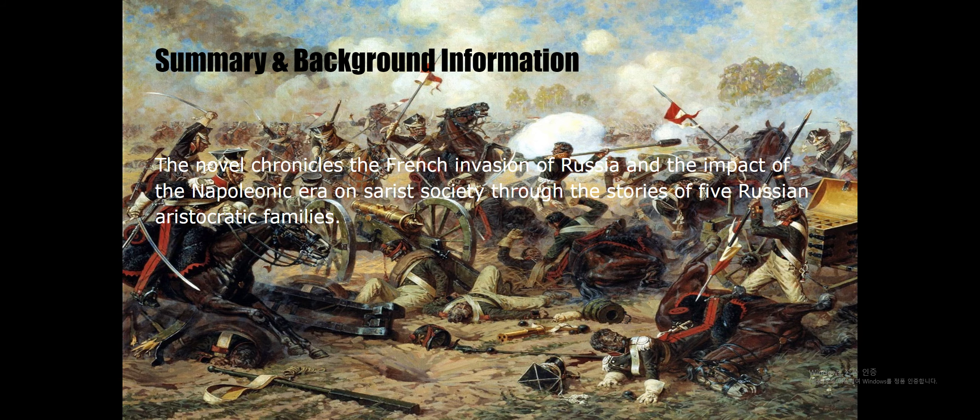Next is summary and background information. War and Peace is a novel by the Russian author Leo Tolstoy, published serially and then in its entirety in 1869. It is regarded as a central work of world literature and one of Tolstoy's finest literary achievements. The novel chronicles the French invasion of Russia and the impact of the Napoleonic era on tsarist society through the stories of five Russian aristocratic families.